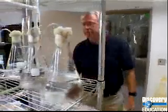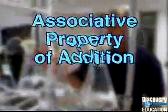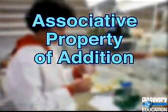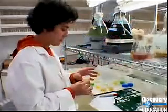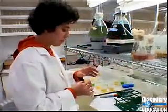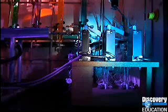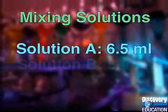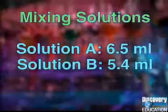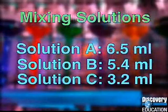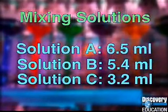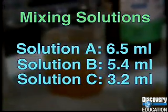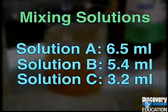We can learn about the associative property of addition by visiting a lab where scientists test these chemicals for disease-fighting properties. Say one scientist has 6.5 milliliters of one solution, 5.4 of another, and 3.2 of a third. Will the way he groups the solutions for testing affect the total amount he has?